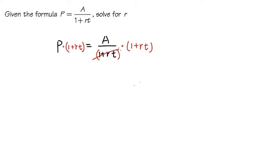Now we'll also multiply by 1 plus rt on the right-hand side as well. This way, this and that will cancel out. We will have no fraction. This is why I left a space earlier, so I can put in the lowest common denominator right here with the P.